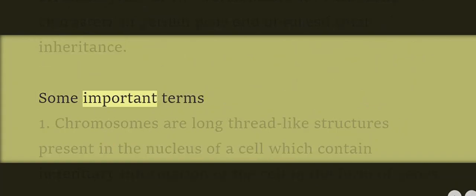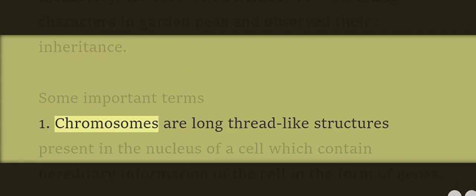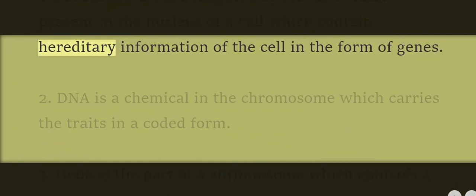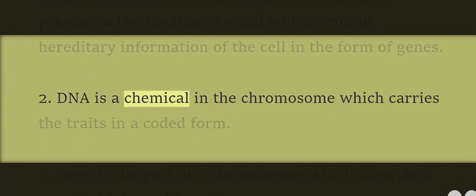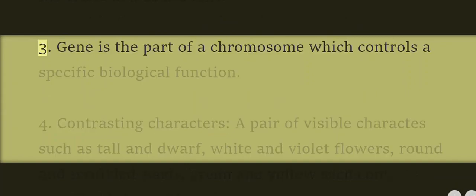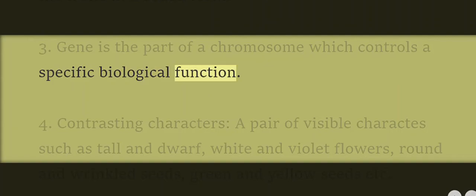Some Important Terms. 1. Chromosomes are long thread-like structures present in the nucleus of a cell which contain hereditary information of the cell in the form of genes. 2. DNA is a chemical in the chromosome which carries the traits in a coded form. 3. Gene is the part of a chromosome which controls a specific biological function.